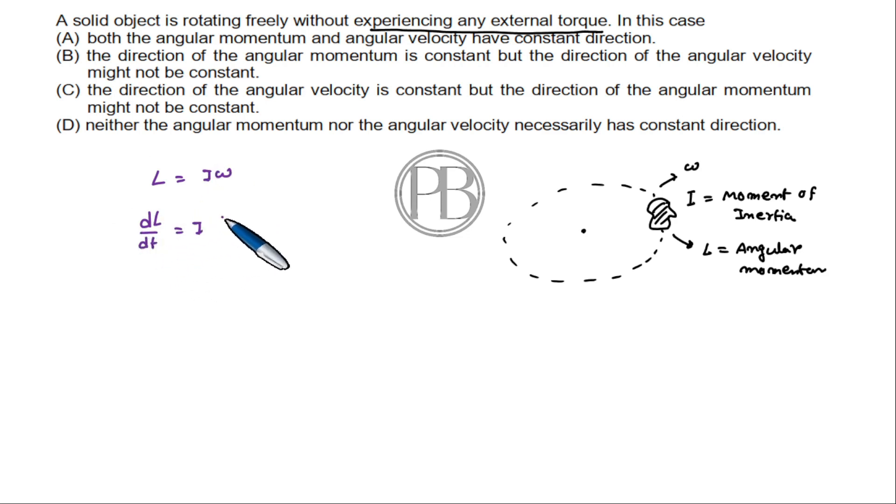I is constant, so I into d omega by dt. The torque - the external torque is zero. So from dL/dt, L is constant. L constant means the direction is constant.